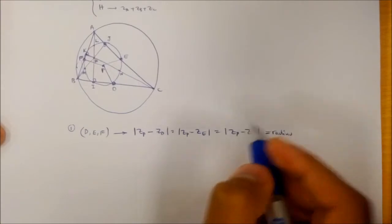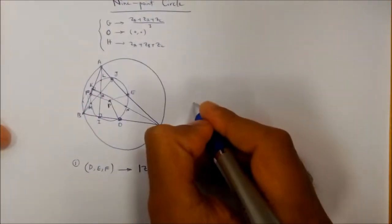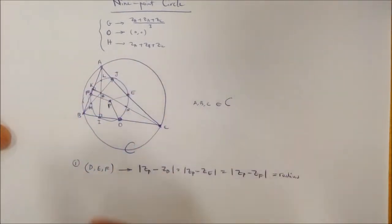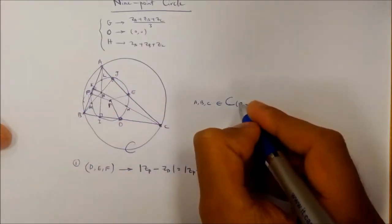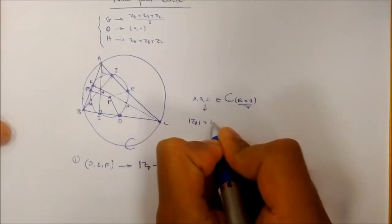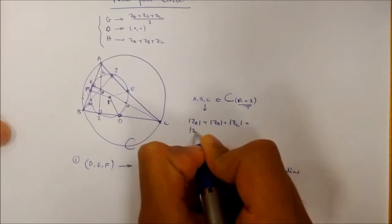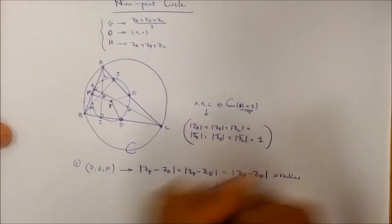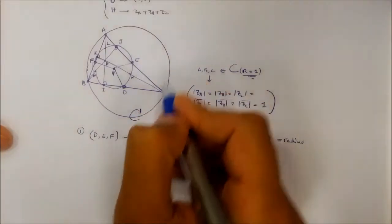Before I continue, I should say that without loss of generality, I suppose that all vertices A, B, and C belong to a unit circle C. So the radius of the circumscribed circle of triangle ABC is assumed to be one. Therefore the norm of ZA, ZB, and ZC, as well as their conjugates ZA̅, ZB̅, and ZC̅, are all equal to one.